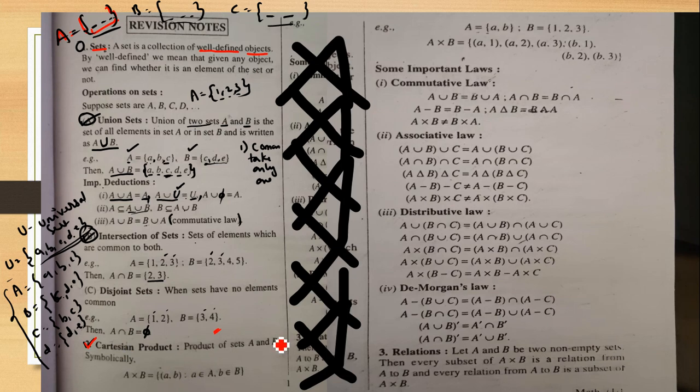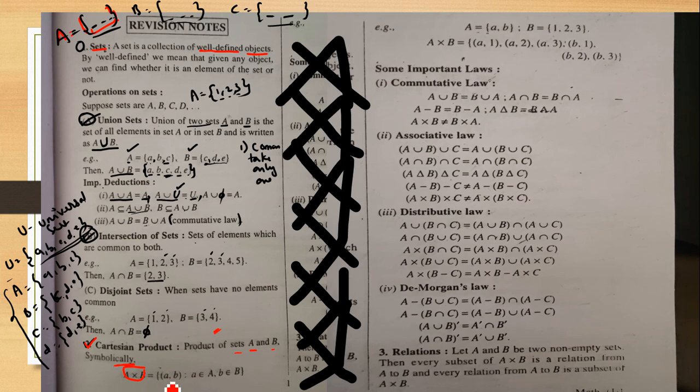Cartesian product — the direct product, the product of two sets. Set A and set B symbolically. The Cartesian product of sets A and B — symbolically written — is a mix of set numbers. Elements from set A and set B, one element from A and one from B.